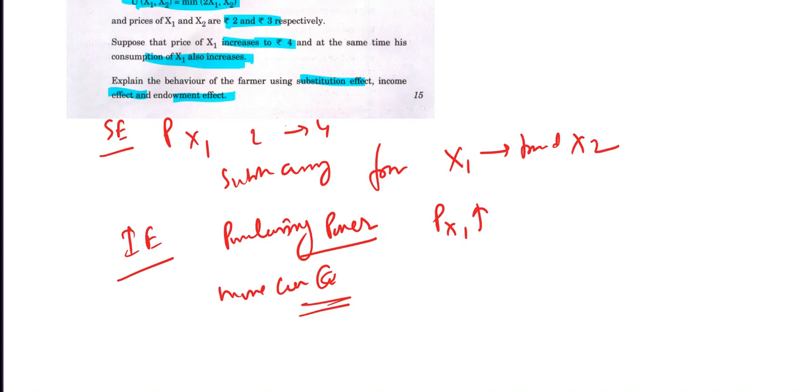A farmer who consumes more of X1 essentially treats it as if it were an inferior good. This means that as his income increases, he chooses to consume less. This can be interpreted as an income effect leading to a decrease in the consumption of X1.